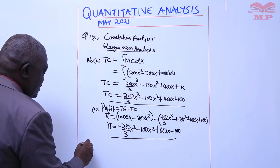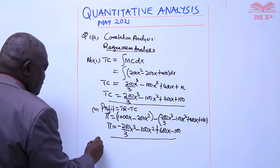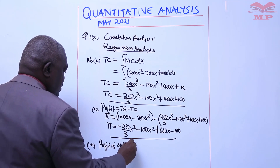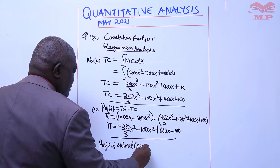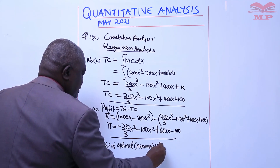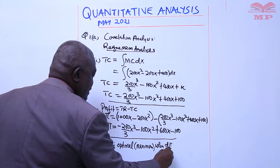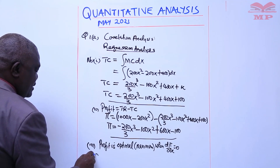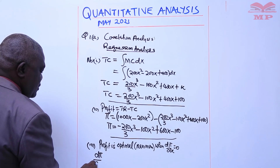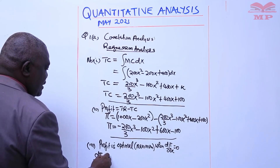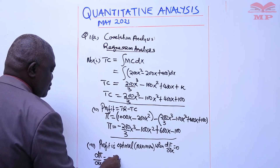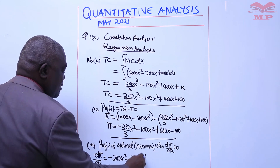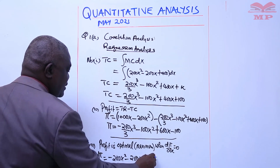Profit is optimal — maximum — in this case when dπ/dx equals zero. When I differentiate, I get dπ with respect to x to be: negative 200x squared differentiated, minus 200x, plus 600, and this must be equal to zero.